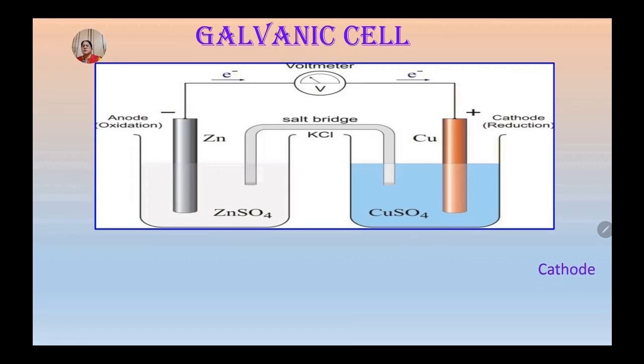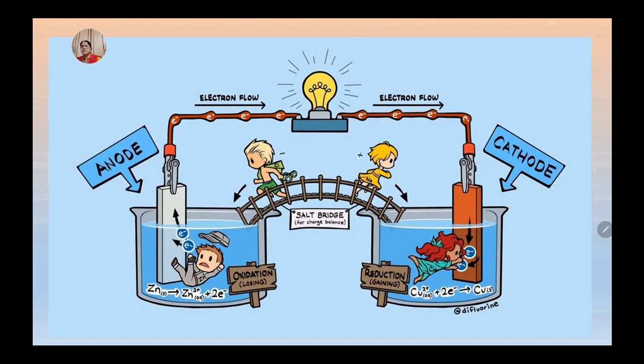For a memory aid, keep in mind the alphabetical order of first letter of A of anode comes before C of cathode. To remember, you can use the phrase anox where an comes from anode and ox comes from oxidation. So oxidation at anode and red cat for reduction at cathode. And N of negative comes before P of positive. So anode is negative and cathode is positive.